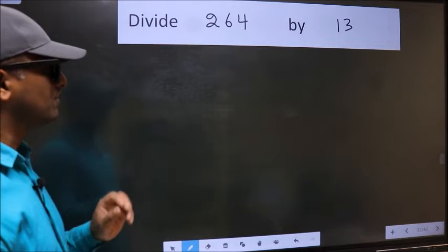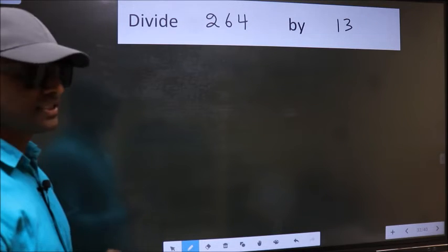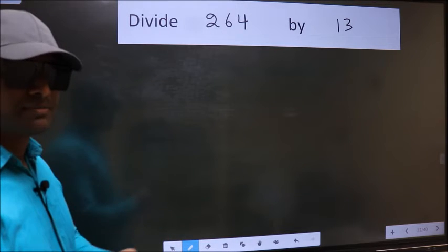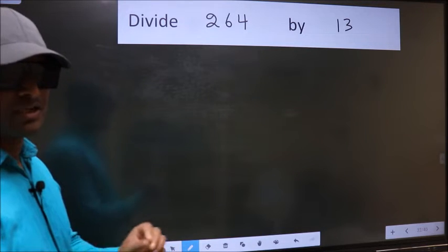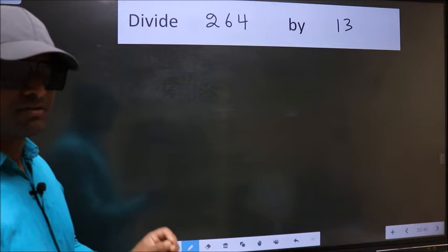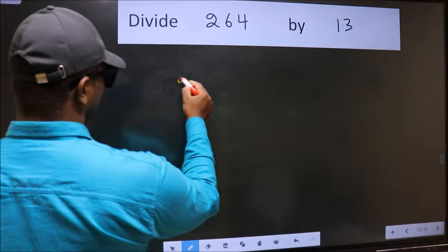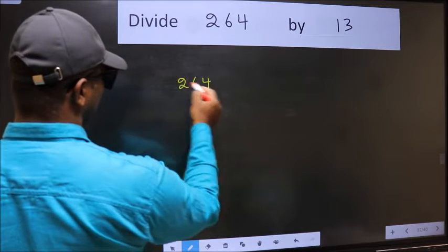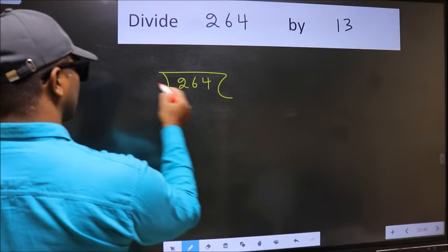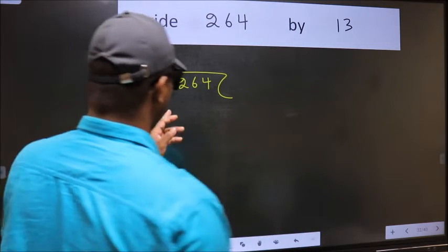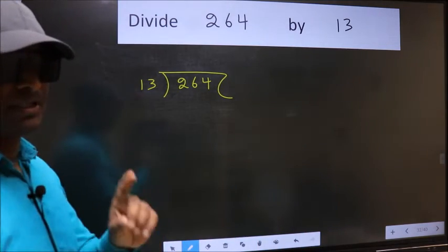Divide 264 by 13. While doing this division, many do this mistake. What is the mistake that they do? I will let you know. But before that, we should frame it in this way. 264 and 13 here. This is your step 1.